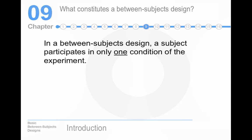What constitutes a between-subjects design? The person participates in only one condition of the experiment. Within-subjects design, the person participates in every condition of the experiment. But this chapter is about between-subjects or between-groups designs. We use those terms interchangeably. And in a between-subjects design, they're only in one condition.